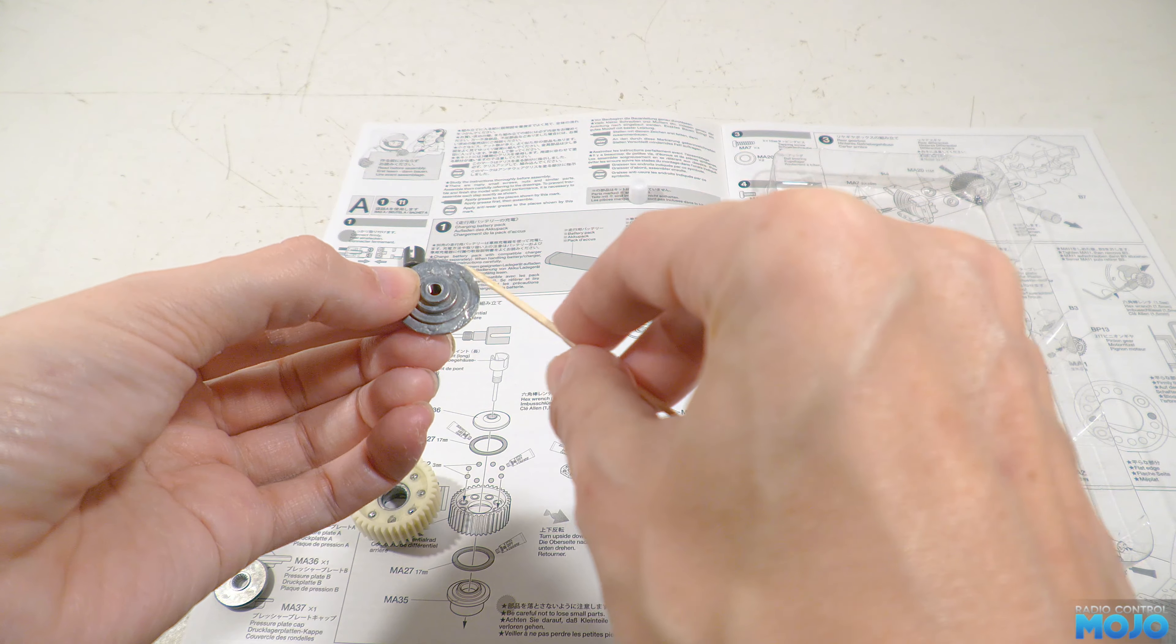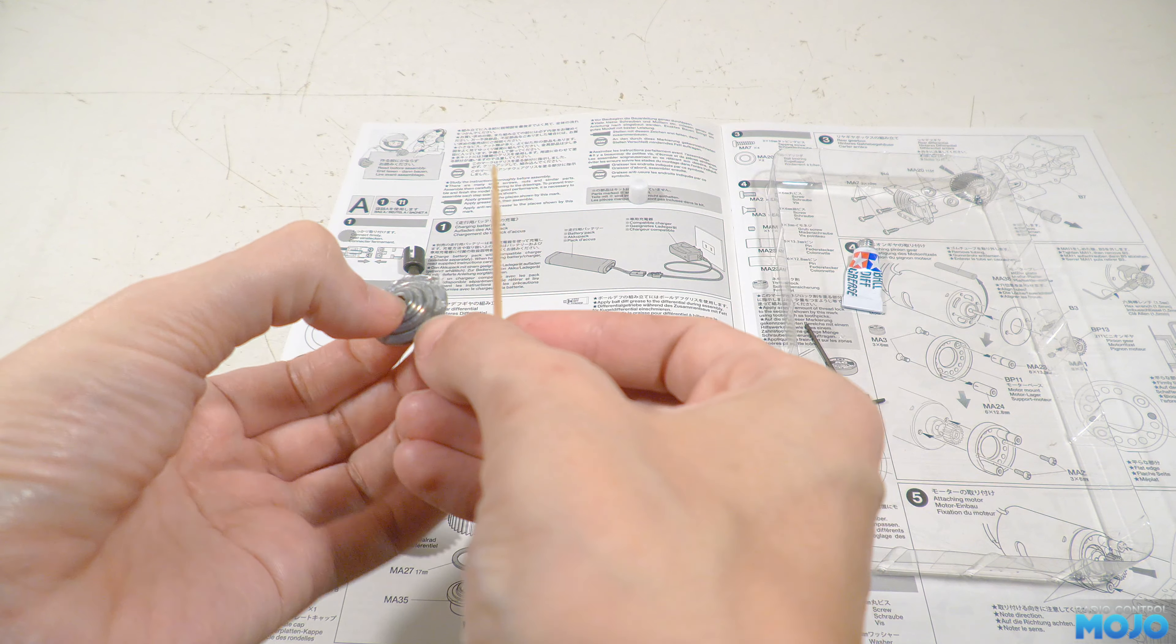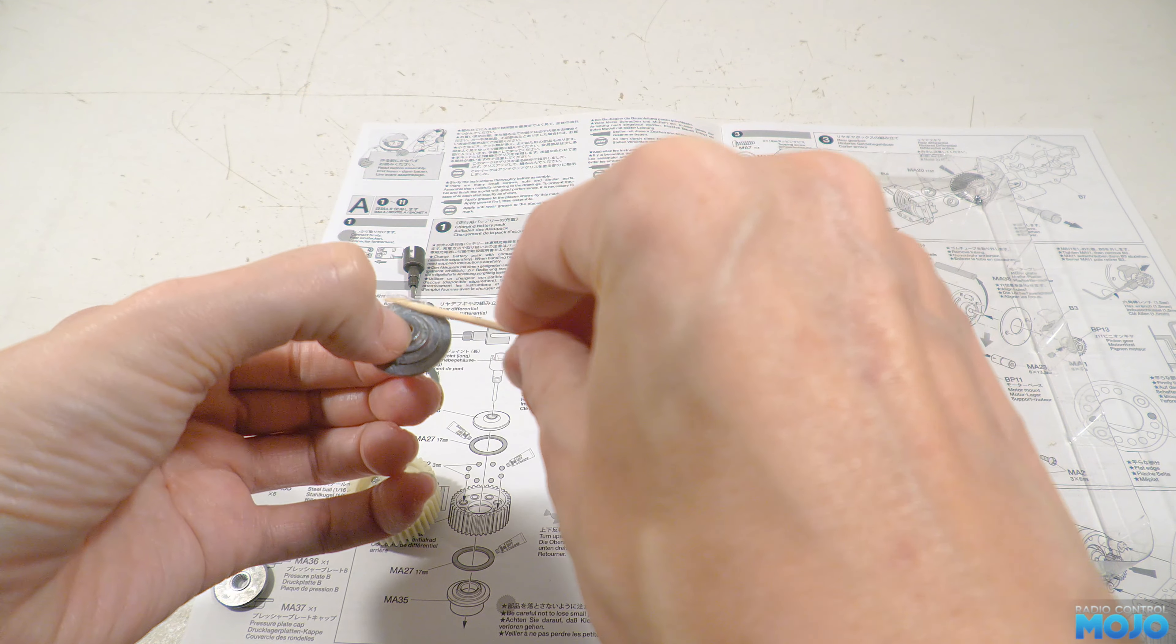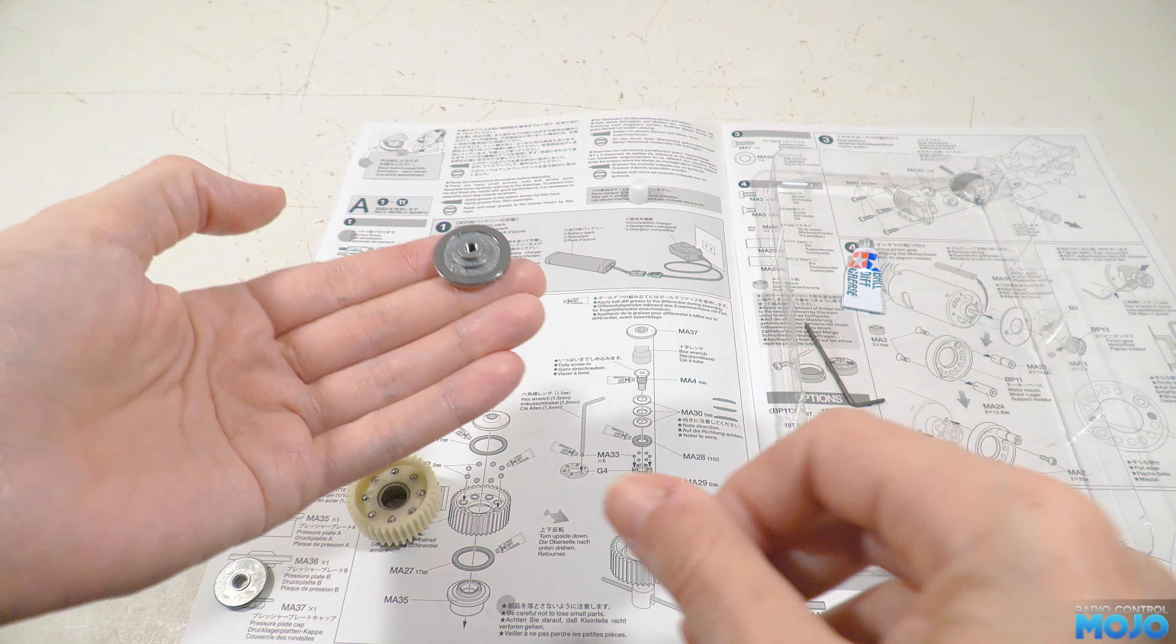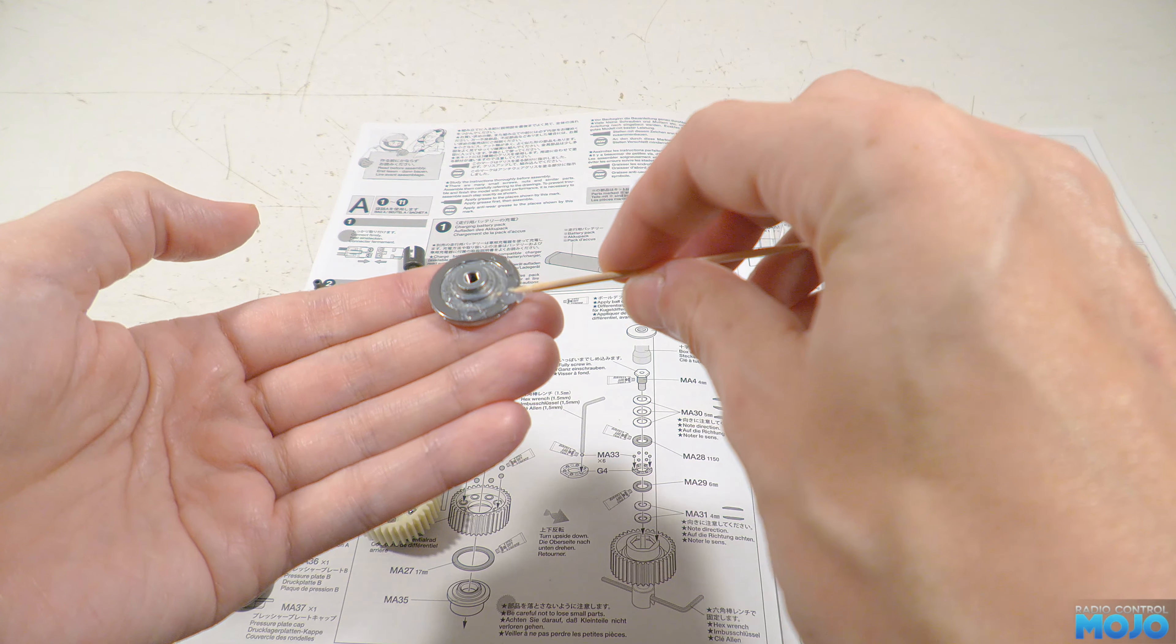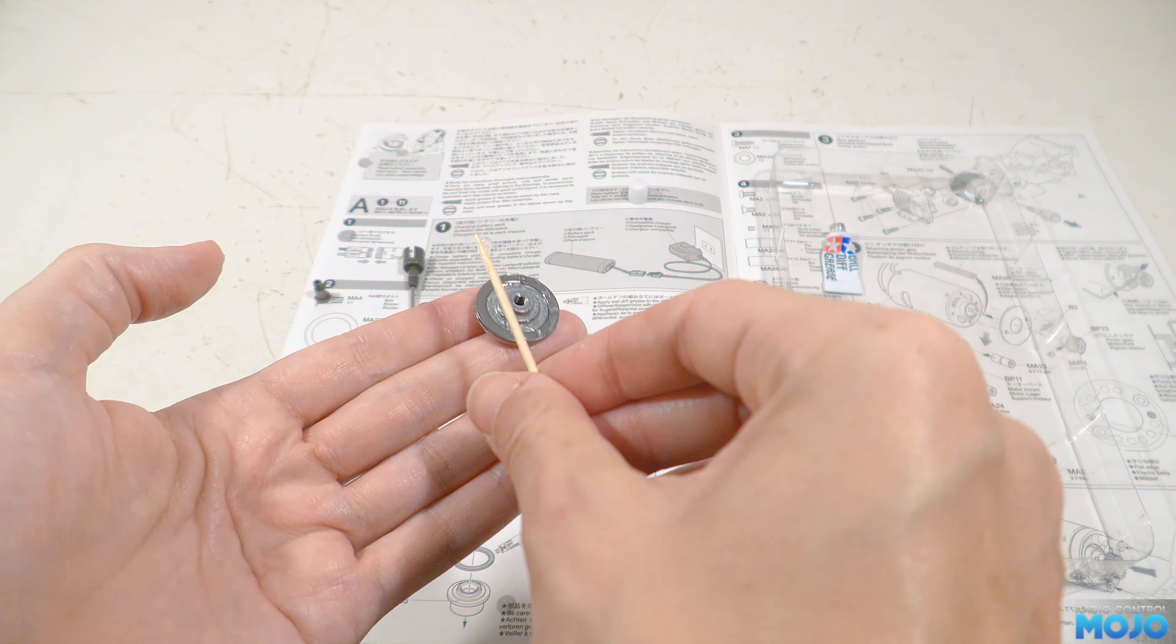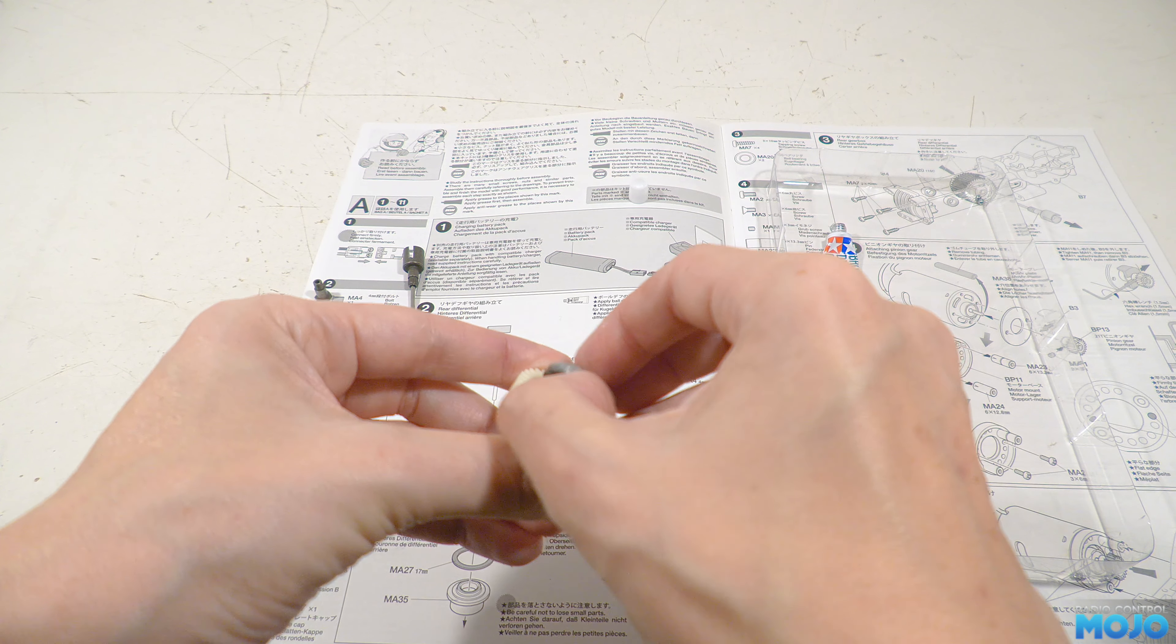Next we take pressure plate B, and just like the other one, add a little bit of grease where the thrust washer sits. Then we add the thrust washer, again making sure the rounded side is away from the plate, and add some more grease. Pressure plate B now drops into the diff gear so the washer sits on the balls.